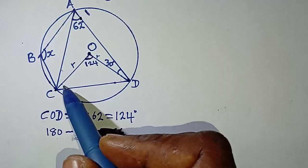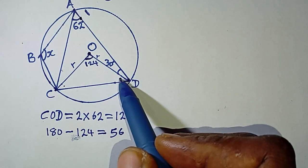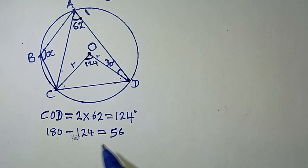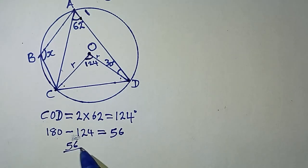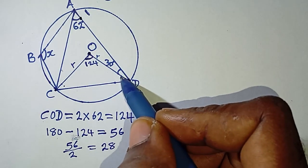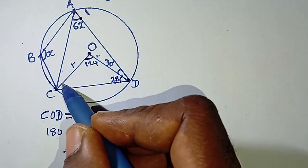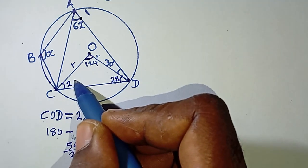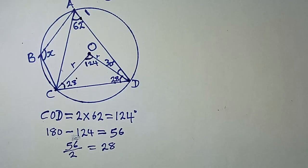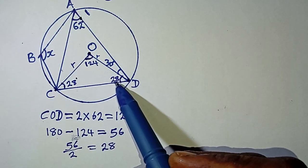Since they are equal — because they are the base angles of this isosceles triangle — we divide 56 by 2, which gives us 28°. So each of these base angles is 28 degrees.